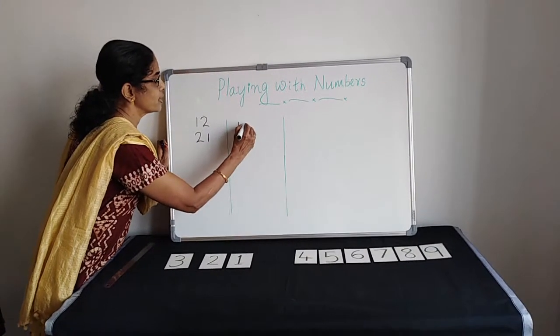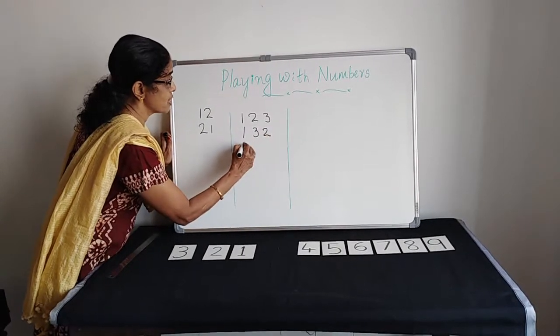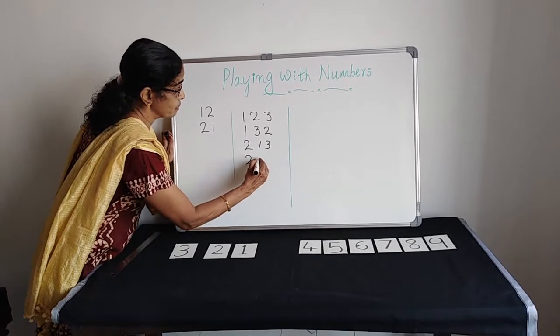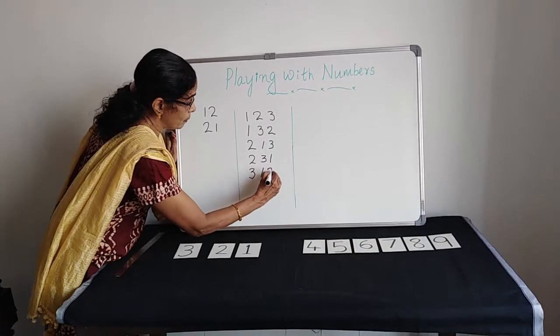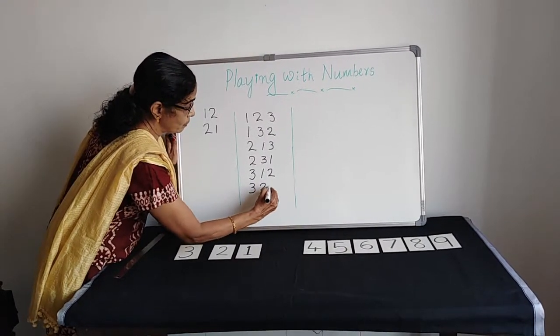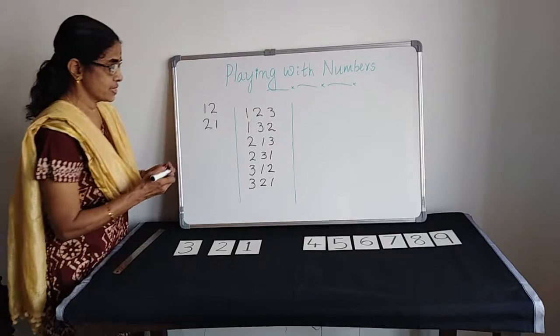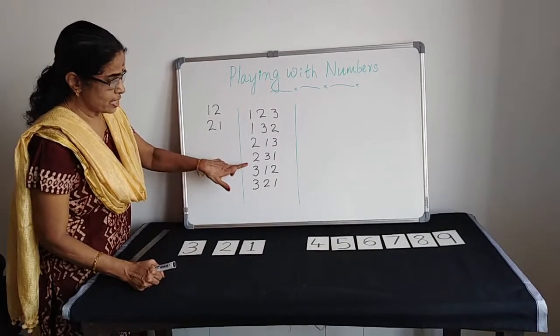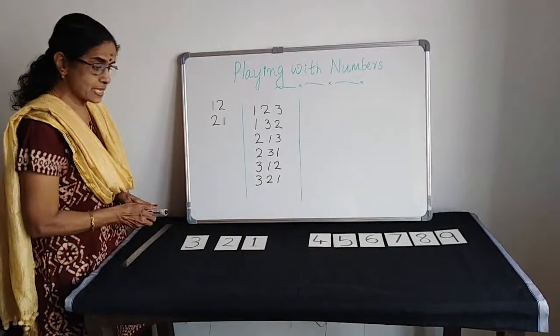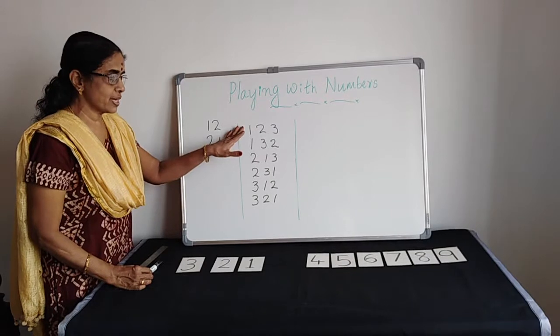Starting with 1, 123, 132. Now start with 2. 1, 2, 3, 4, 5, 6 numbers. We made 6 numbers. Here we are not supposed to repeat the digits. We made, we have taken 3 cards, 3 digit number. Now we are going to make 4 cards.